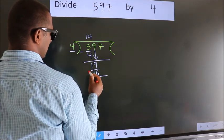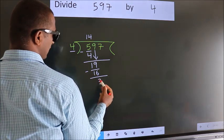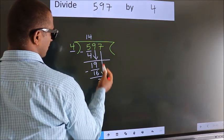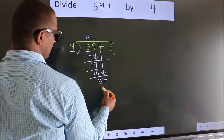Now we subtract. We get 3. After this, bring down the beside number. So 7 down, so 37.